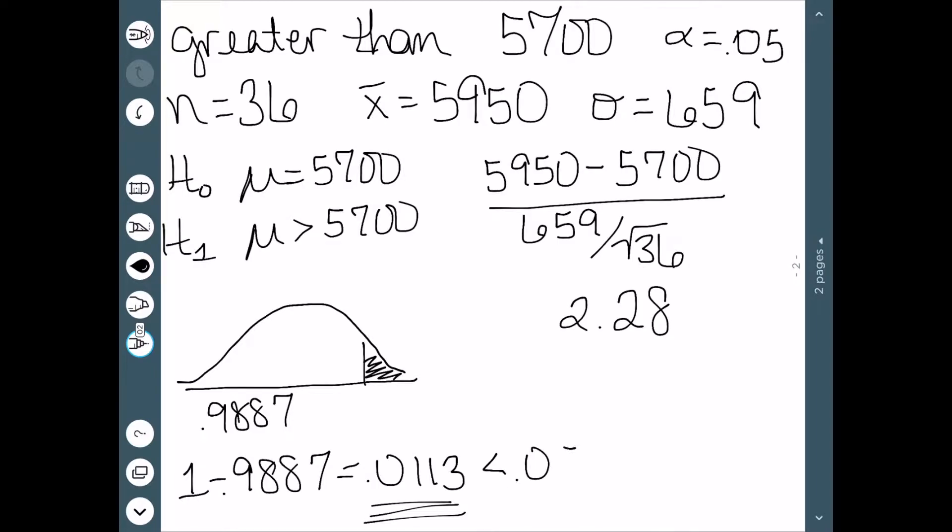In this case, our p-value is less than alpha, which tells us that we reject H0. So the article was right. It is actually greater than 5,700.